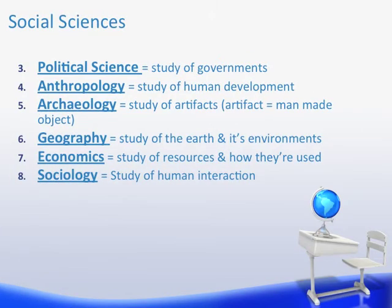Social sciences: along with history, you have political science — that is the study of governments and power. Anthropology is the study of human development. Archaeology is the study of artifacts, and remember, artifacts are man-made objects. Geography is the study of the earth and its environment. Economics is the study of resources and how they're used. And sociology is the study of human interaction.